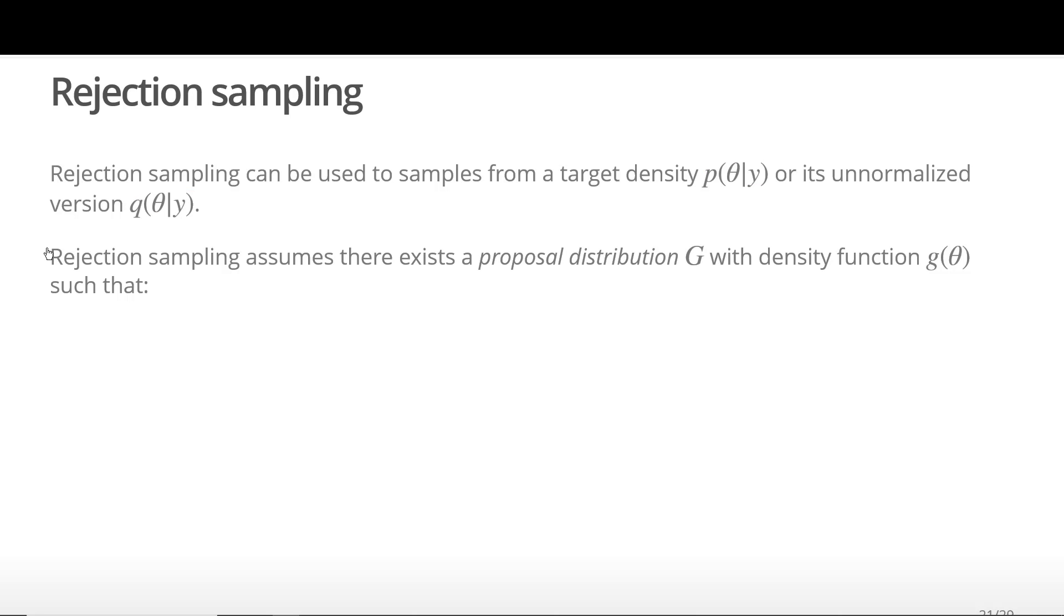In order to perform rejection sampling, we need to have a proposal distribution G with density g such that we can easily draw a realization from the distribution defined by G.